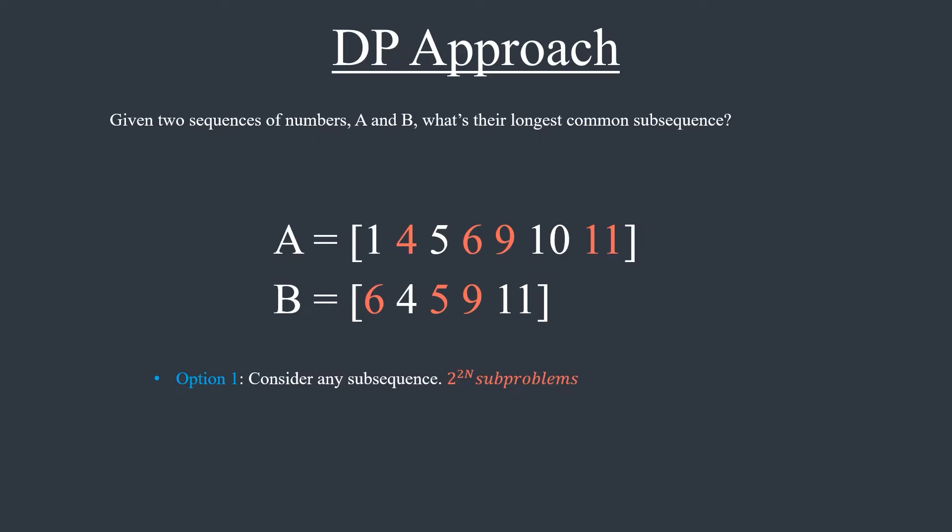At this point, I'd probably explore other options and come back to this one if I can't find anything better. Another way to represent sub-problems is to consider continuous parts of the arrays. There are n to the 4 sub-problems that we have to solve. This is much better than option 1, but let's keep going.